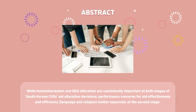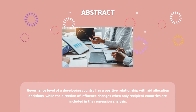While humanitarianism and ODA allocation are consistently important at both stages of South Korean CSOs' aid allocation decisions, performance concerns for aid effectiveness and efficiency, language, and religion matter especially at the second stage. Change in governance level of a developing country has a positive relationship with aid allocation decisions.